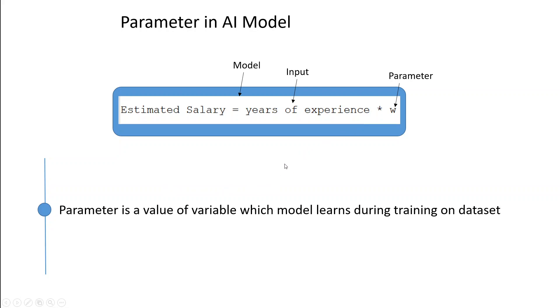During the training process, the model looks at the data and tries different values of W to see how well the model's predictions match the actual salaries in the training data. It then adjusts the value of W to minimize the difference between the predicted salaries and the actual salaries. Once the training is complete, the model has learned the best value of W that allows it to make accurate predictions.